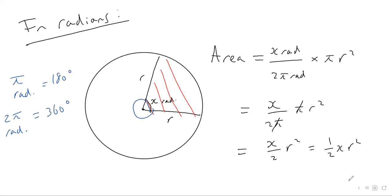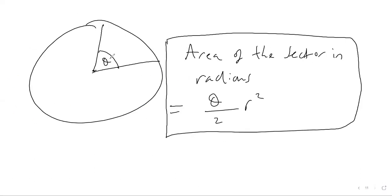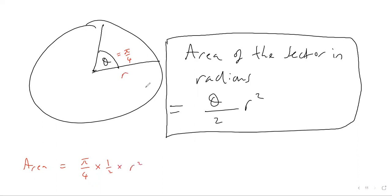That's your formula to work out areas of sectors. For example, if theta was π/4, the area of your sector would be π/4 divided by 2 — so a half of that — times by r squared. You get π/8 times your radius squared. That's how you work out the area of a sector. The formula is: area of sector in radians equals ½θr².